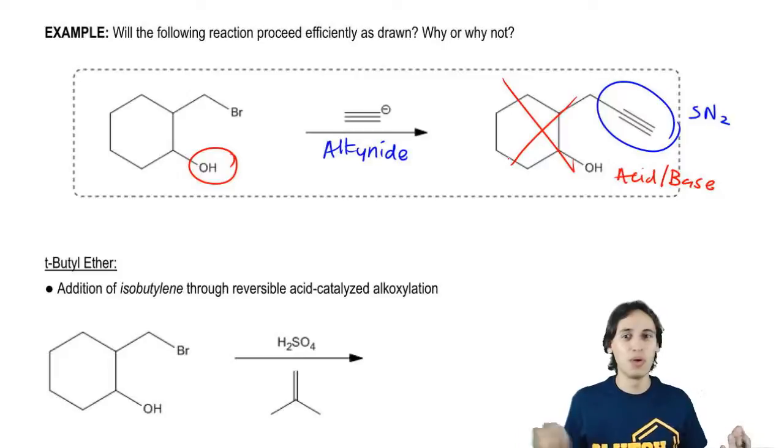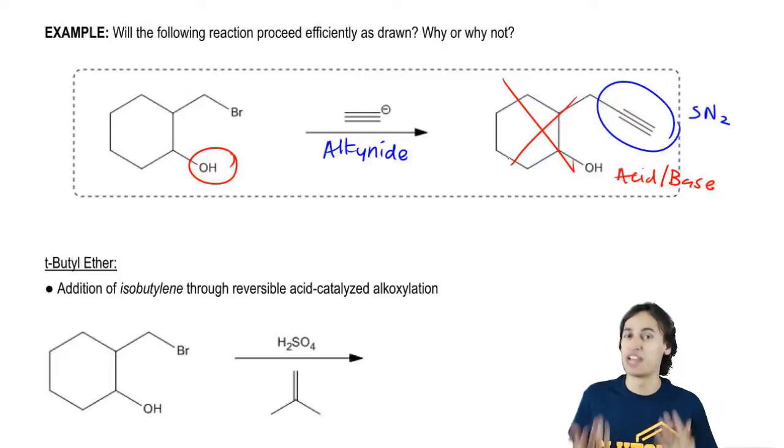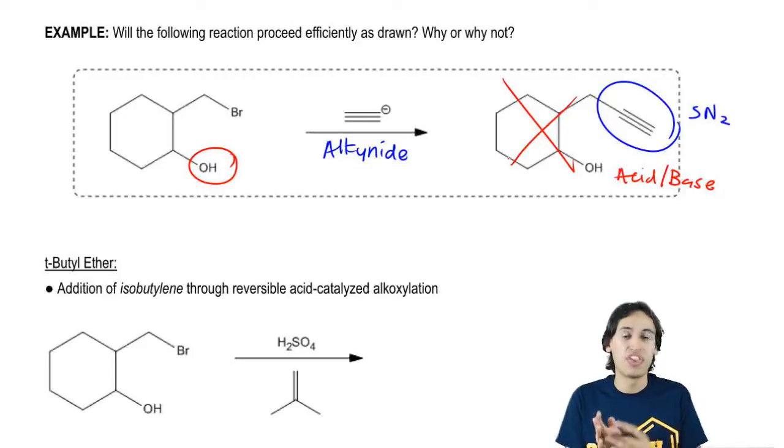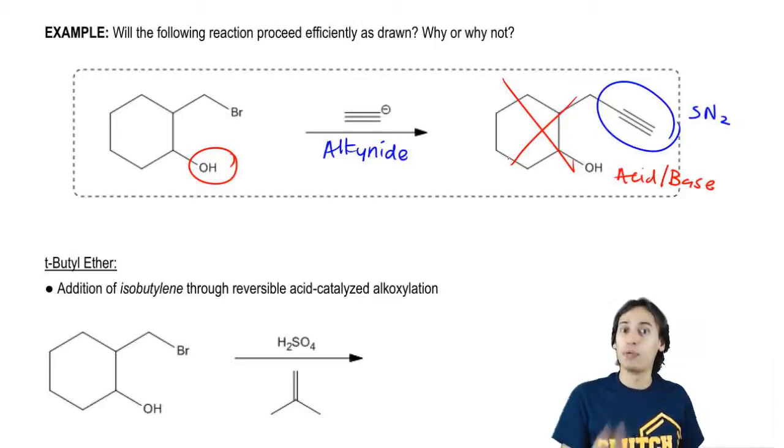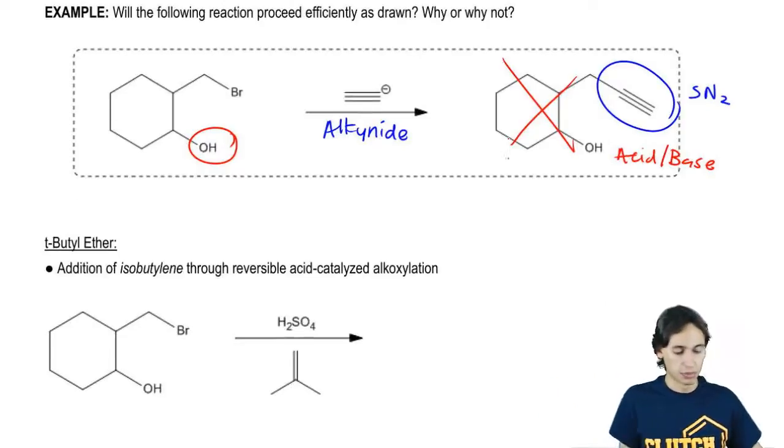Well, scientists determined, hey, you know what? Alcohols are messing up a lot of different reactions. So if we can figure out a way to get rid of the alcohol for a few minutes, then run the rest of the reaction and then regenerate the alcohol, that would be really helpful. And that's exactly what we're going to do with our protecting group. So the first type of protecting group that you need to know and probably one of the more common ones is a tert-butyl ether protecting group.